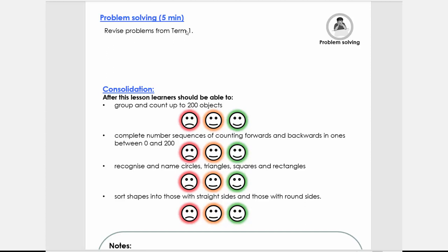Then our problem solving — we focus on what we covered in Term 1. Keep an eye on the SA Teacher e-store for these problems and their solutions. Then lastly, we look at the consolidation. If you read the statements and your child has all green faces, we can go to the next lesson. If you have some orange or red — orange is where you supported them and red is where they couldn't do it — you need to revisit and revise certain activities and questions, or contact us at SA Teacher.